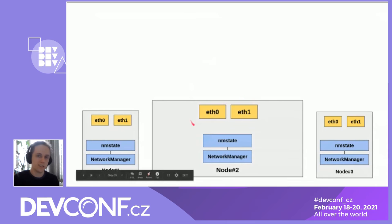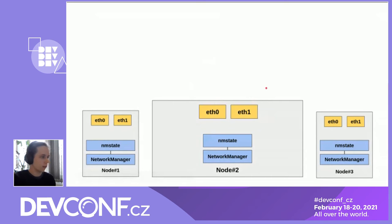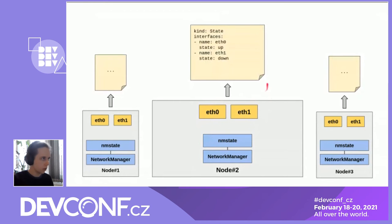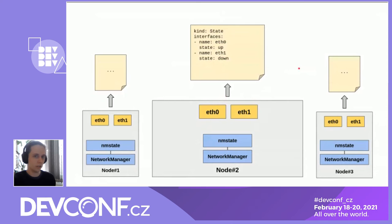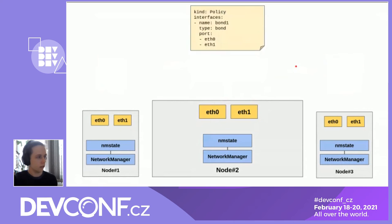Here we have our three nodes, each with an instance of nm-state communicating with the local NetworkManager to obtain network status and write configuration back to the host. Each node has two interfaces: eth0 and eth1. The first feature of nm-state is that it reports the network state as a Kubernetes object — let's call it a NodeNetworkState — containing the list of available interfaces: eth0 which is up, and eth1 which is currently down. This is done for every node in the cluster.